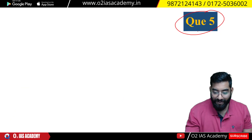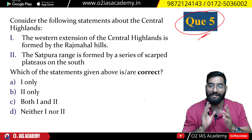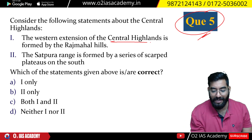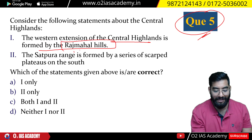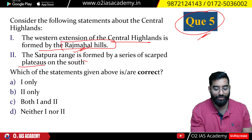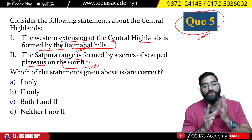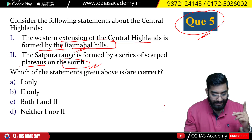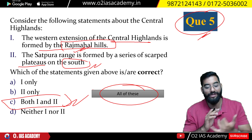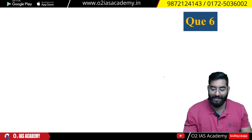Question number 5: Consider the following statements regarding Central Highlands — they are the western extension of Central Highlands; they are formed by Rajmahal Hills and Satpura; it is formed by a series of scarped plateaus on the south. The correct answer is all of the above, meaning both statements 1 and 2 are correct.